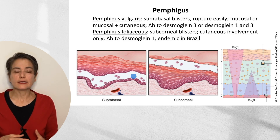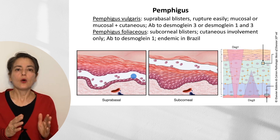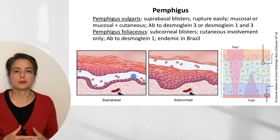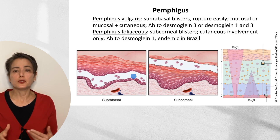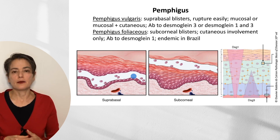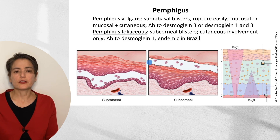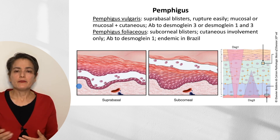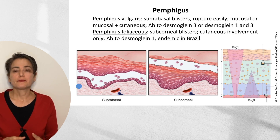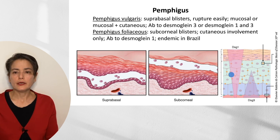Pemphigus foliaceous has several differences. First, it's cutaneous involvement only — it does not tend to involve the mucous membranes, probably related to the distribution of desmoglion 1 and 3 in skin versus mucosal membranes. The blisters will be subcorneal — much more superficial — and while pemphigus vulgaris blisters look like typical blisters with an erythematous surface, in pemphigus foliaceous they're so superficial that you might just see a serous crust. This is due to an antibody to desmoglion 1 only, causing lysis predominantly in the upper portion of the epidermis, hence the subcorneal blister.